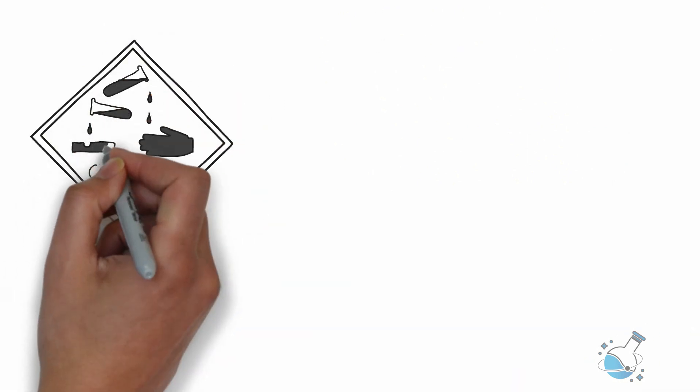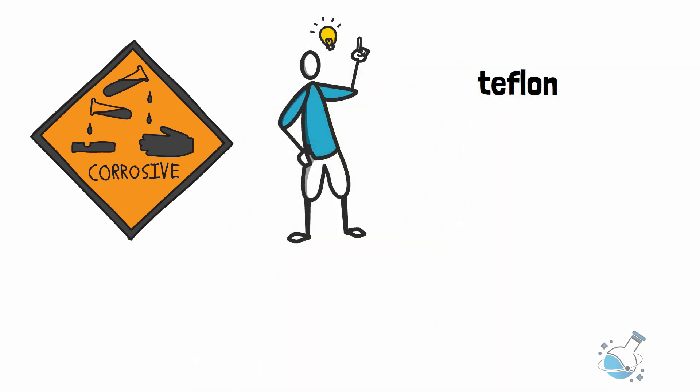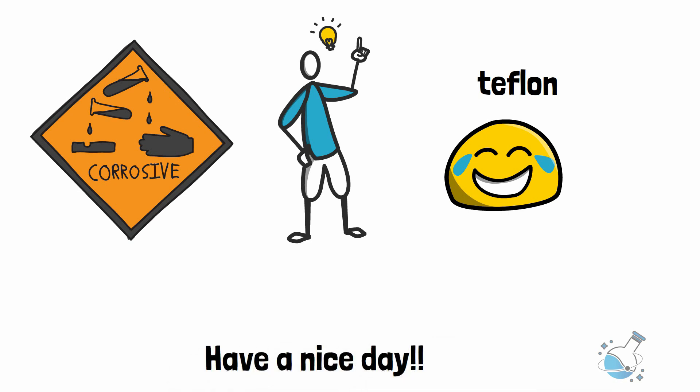If you ever come across any superacid, it is probably best to stay away. It is uncertain if humans will produce an even stronger acid. Until then, we have frying pans. Sorry, Teflon. That's it for today. Have a nice day.